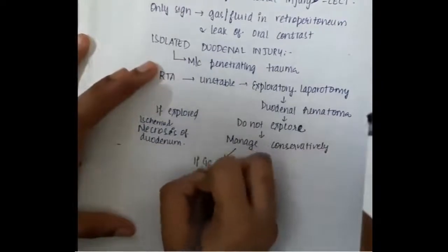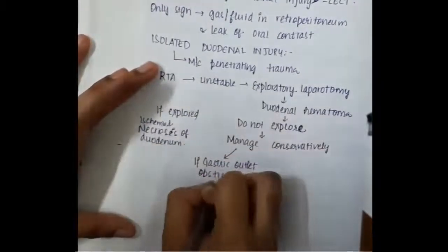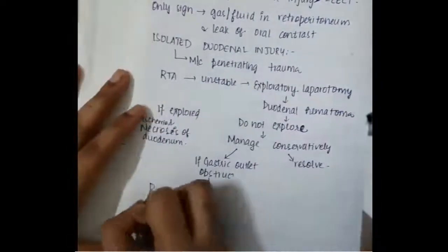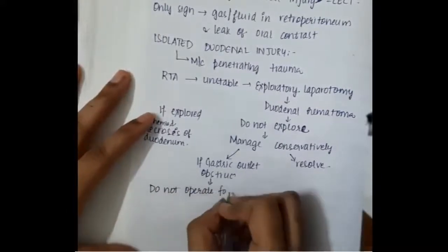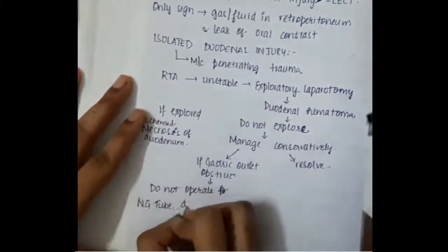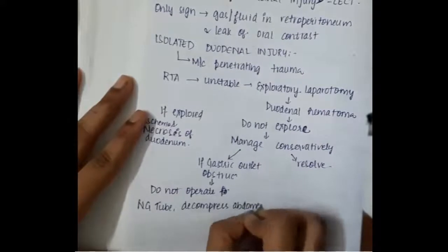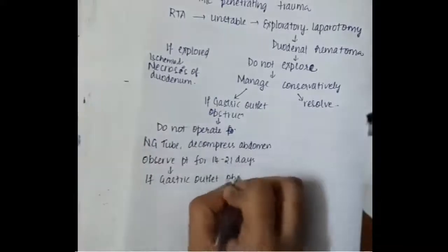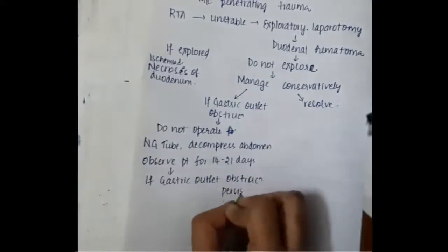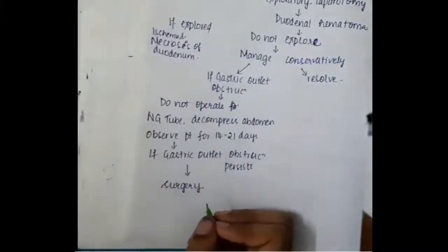Manage conservatively and most cases will resolve. But if there is gastric outlet obstruction, do not operate — instead, insert a nasogastric tube to decompress the abdomen and observe the patient for 14 to 21 days. If gastric outlet obstruction still persists after NG tube decompression, then proceed to surgery.